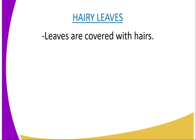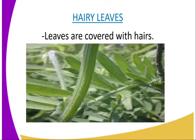The third structural factor which affects the rate of transpiration is hairy leaves. As you can see from our diagram, the leaves here are very hairy. In some plants, leaves are covered with hairs. These hairs trap a layer of still, moist air on the surface of the leaves, thus reducing the rate of transpiration.